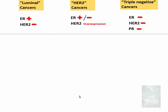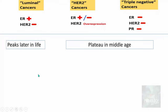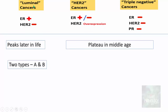We need to know this molecular classification because luminal cancers peak later in life, whereas HER2 cancers and triple-negative cancers plateau in middle age. Luminal cancers are further categorized into luminal type A (low proliferation) and luminal type B (extremely high proliferation).